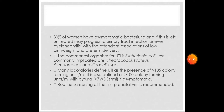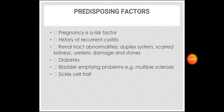If asymptomatic, routine screening at the first prenatal visit is recommended. Predisposing factors to UTI include pregnancy itself, history of recurrent cystitis, renal tract abnormalities such as duplex system, scarred kidneys, ureteric damage and stones, diabetes, bladder emptying problems, multiple sclerosis, and sickle cell trait.